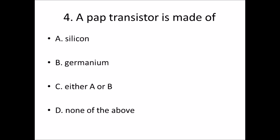Fourth bit: A packed transistor is made of. Option A, silicon. Option B, germanium. Option C, either A or B. Option D, none of the above. Answer is Option C, either A or B.